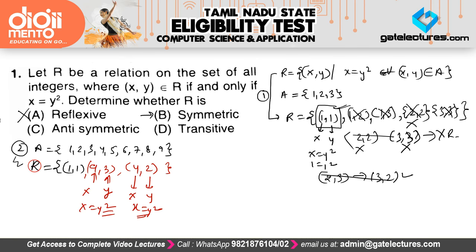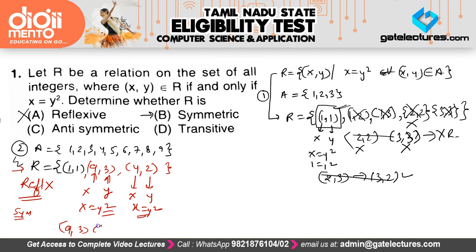From this relation again we can say it is not reflexive, because 2 comma 2, 3 comma 3, 4 comma 4 are not present. For symmetry, if 9 comma 3 is there then 3 comma 9 should also be there, but it is not in this set. Therefore this relation is not symmetric either. So we have confirmed: not reflexive and not symmetric.